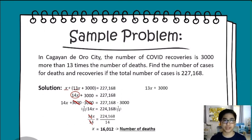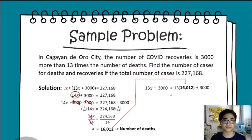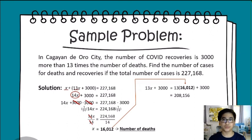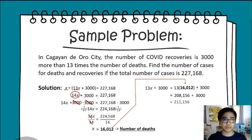To determine the number of recoveries from the equation 13x + 3,000, we have to substitute our answer for the variable x. The product of 16,012 and 13 is 208,156, then copy the rest of the equation. The sum of 208,156 and 3,000 gives us the total number of recoveries from COVID-19, which is 211,156.